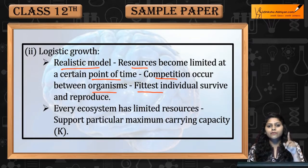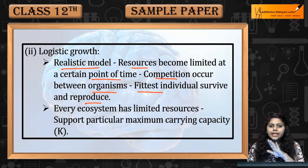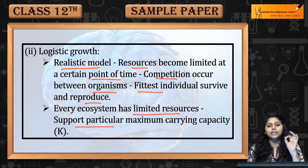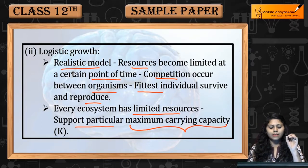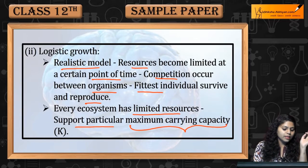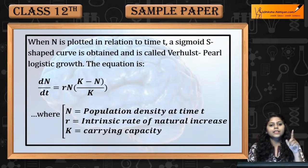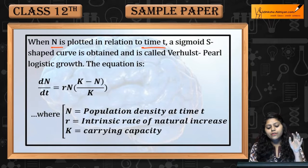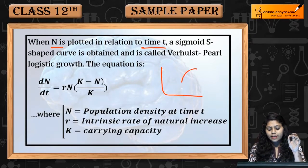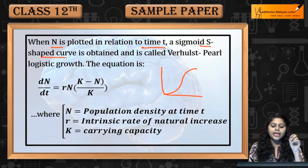Competition occurs between organisms. Jiski wajah se jo fittest individual hai, woh survive aur reproduce karta hai. Ecosystem mein limited resources hain jo support karengi ek particular maximum carrying capacity. Kuch particular carrying capacity hoti hai. Agar N plot karenge in relation to time, then sigmoid shape curve or S-shape curve aata hai.